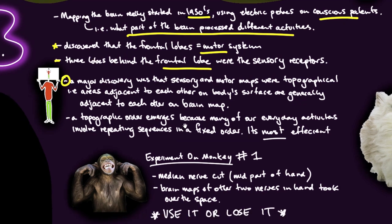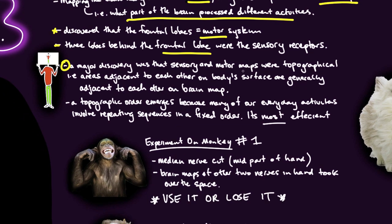One of the big things they found, a major discovery, was that the sensory and motor maps were topographical. That is, areas adjacent to each other on a body's surface are generally adjacent to each other on a brain map.